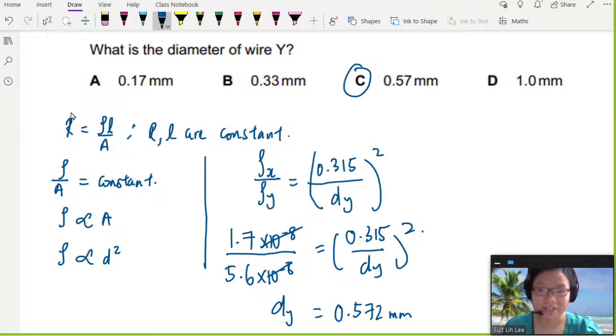So once you identify the constants, you can write out a proportionality relationship and then use ratio to solve. That's it for this one.